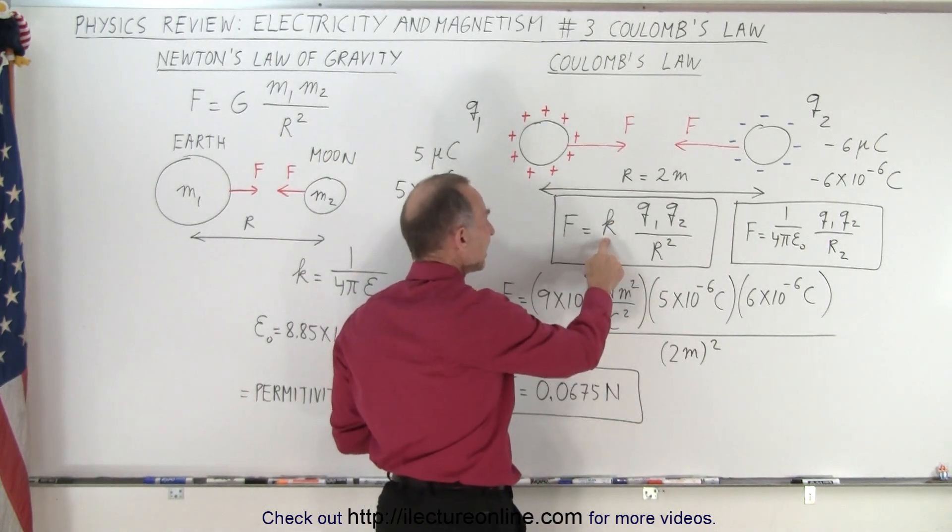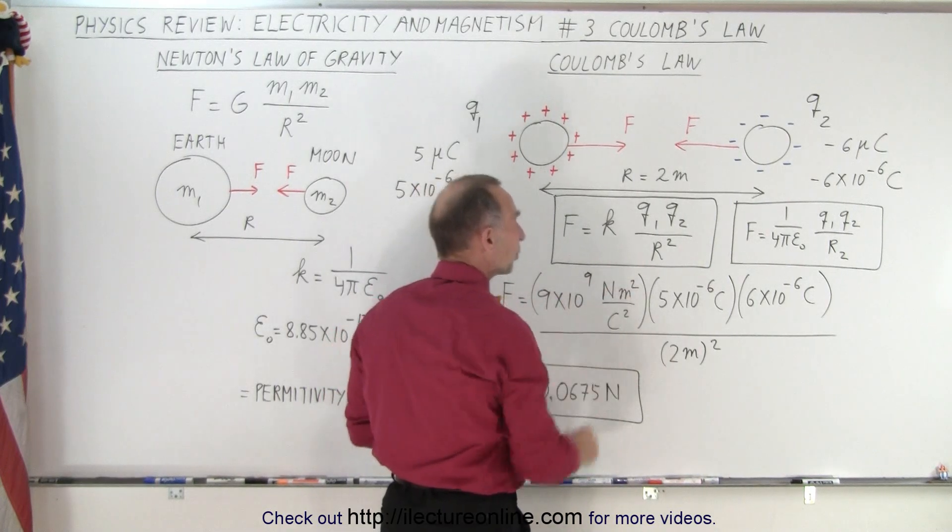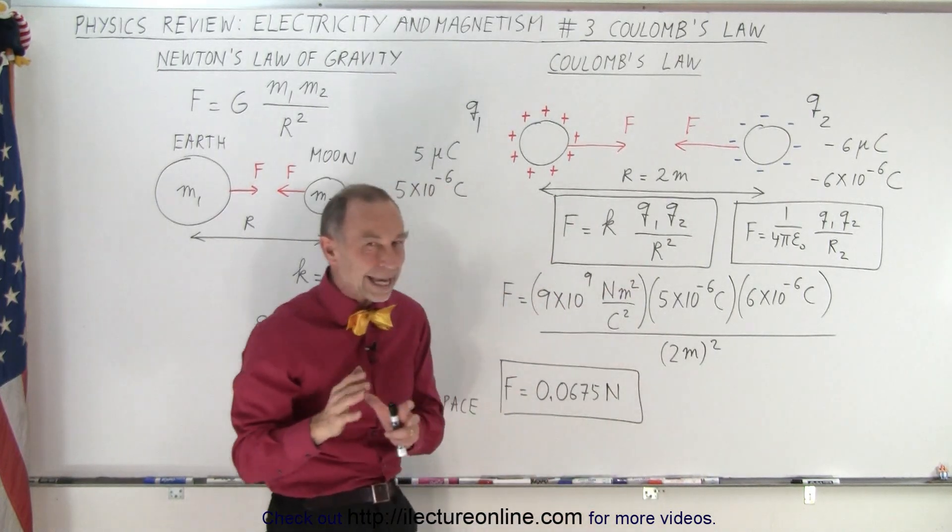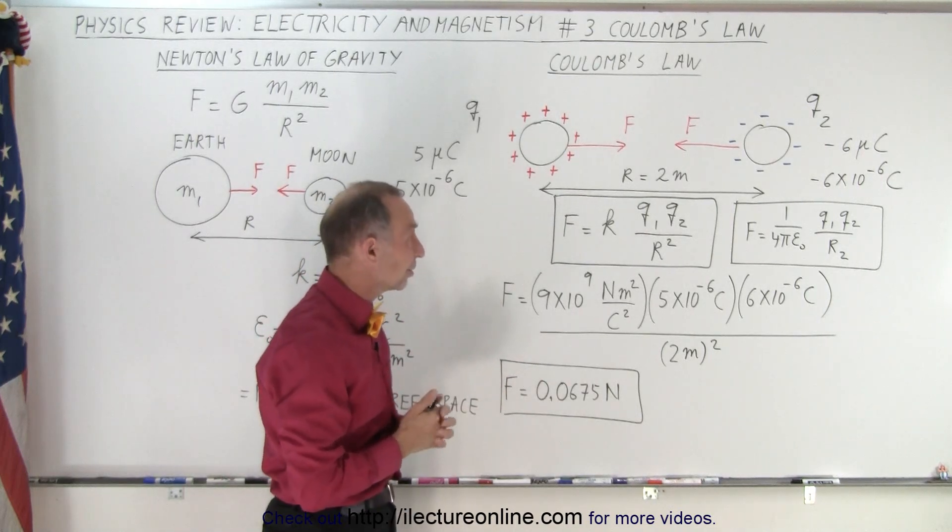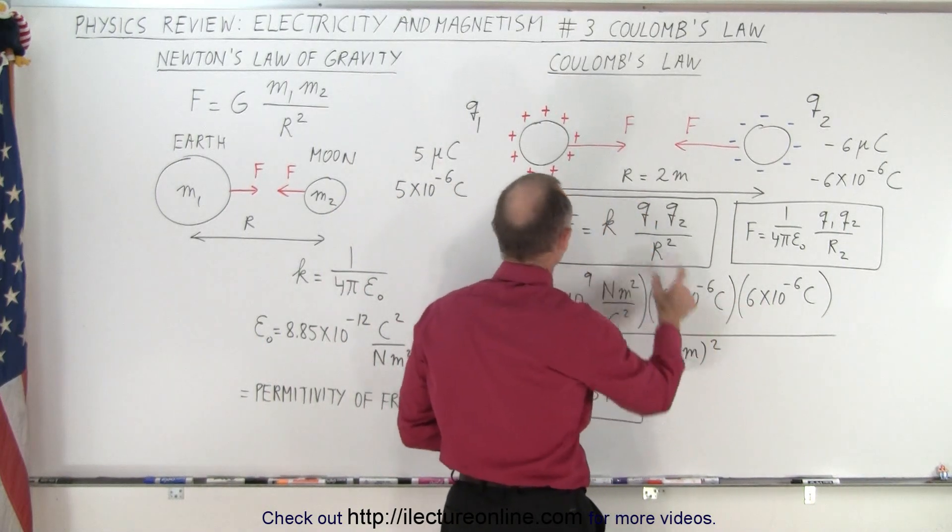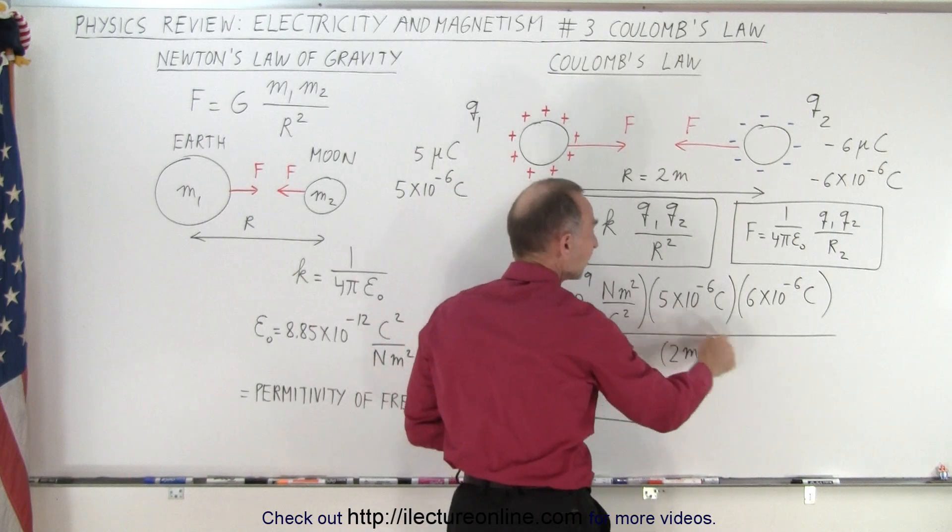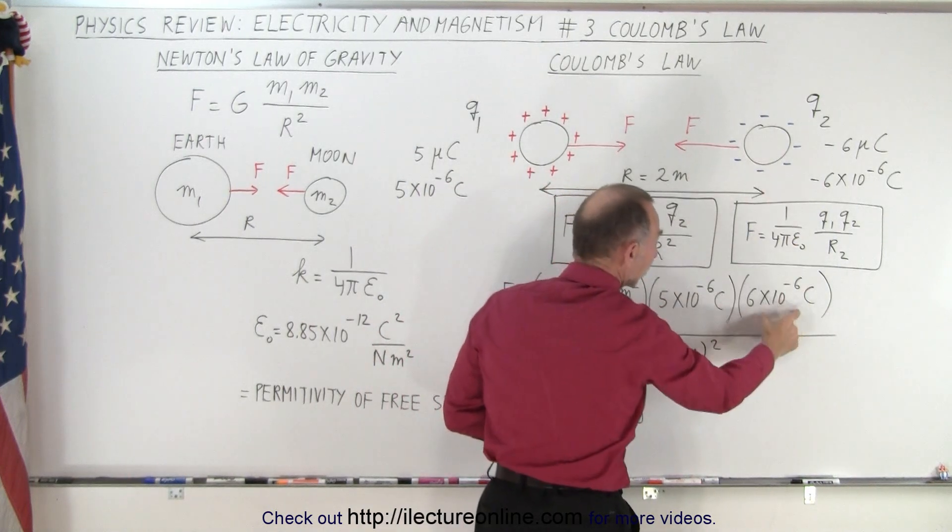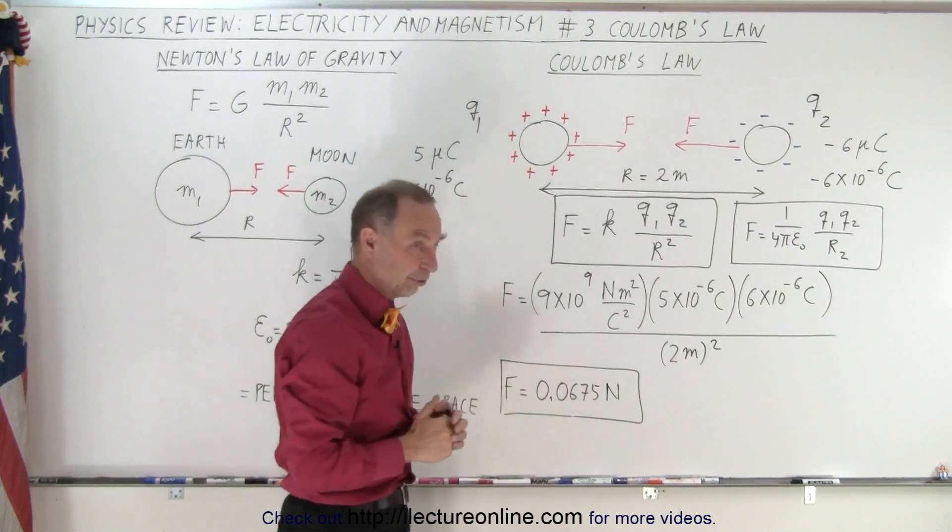The difference is that K is about 9 times 10 to the 9th Newton meter squared per Coulomb squared. It's more like 8.99, but I just like to call it 9, just makes it easier. Then we multiply that times the charges in Coulombs, so this is a positive 5 micro Coulombs, which is 10 to the minus 6, and a negative 6 micro Coulombs, but we don't care about the sign since we're simply looking for the magnitude of the force.